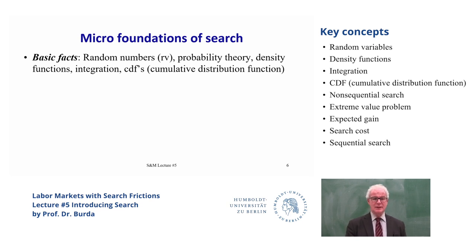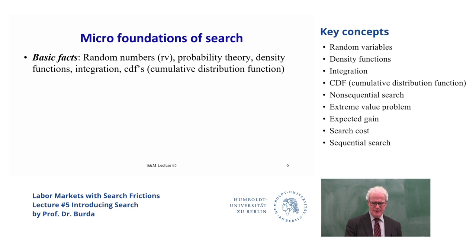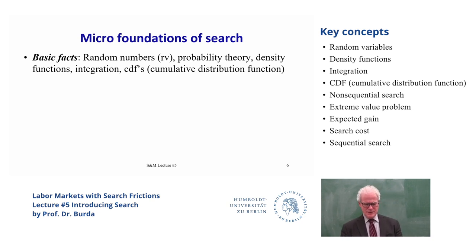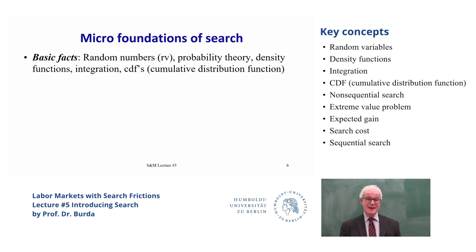In the search theory that evolved in the 1960s and 70s, you can think of the wage as being a draw from a distribution — a random number, possibly from a time-invariant distribution — and use simple ideas from probability theory to think hard about what optimal behavior would be appropriate under these conditions. We need to think about a density function that describes the probability density defined on the support of the random variable. We'll be thinking generally about non-negative random variables.